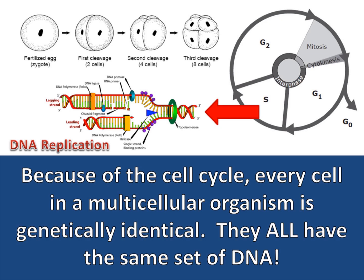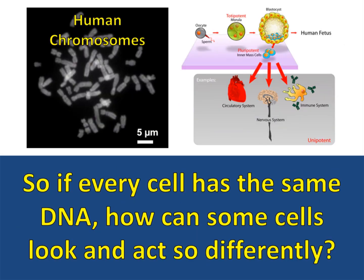Because of the cell cycle, every cell in a multicellular organism is genetically identical — they all have the same set of DNA. So if every cell has the same DNA, how can some cells look and act so differently?